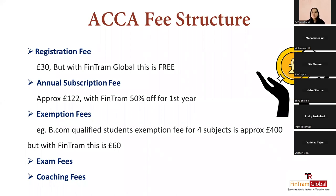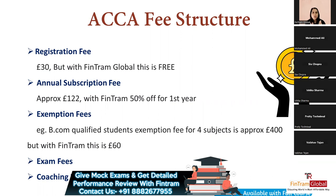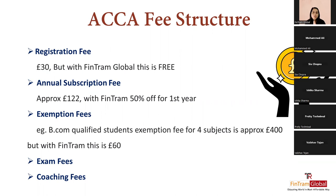The ACCA fee structure: numbers change slightly each year but are more or less the same. The registration fee is £30 — everything in ACCA is paid in pounds, as it is a UK qualification; one pound is currently around 90 rupees. Registration is free if you register through Fintram Global. The annual subscription fee is approximately £122, with a 50% discount in the first year if you are with Fintram. Exemption fees apply — for example, BCom students getting four exemptions would pay approximately £400, or around £60 through Fintram.